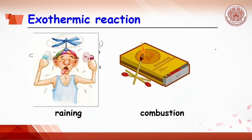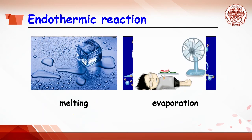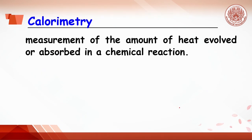For example, before raining, the weather is hot. This is because water vapor releases heat and condenses to a water droplet. Combustion also releases heat. On the other hand, when ice melts, it absorbs heat from the environment, so you will feel cool. Evaporation of sweat makes you feel cool as well. The subject to study the heat from reaction is called calorimetry — a measurement of the amount of heat evolved or absorbed in chemical reactions.